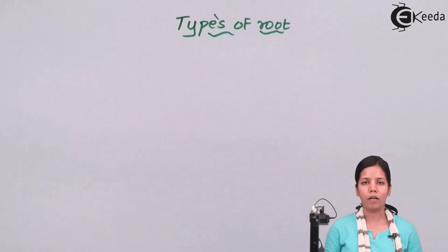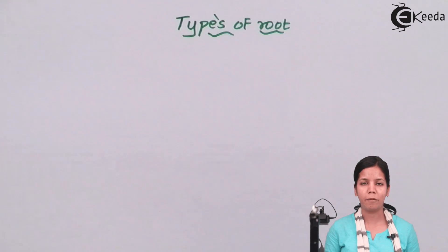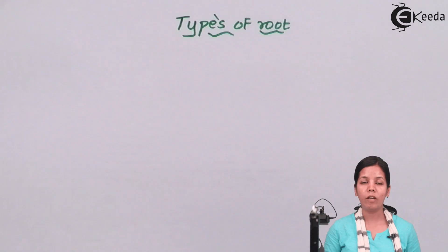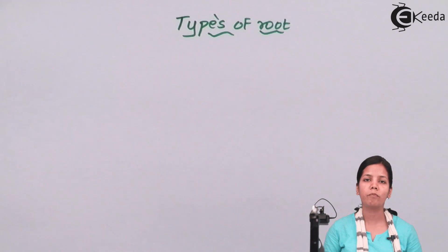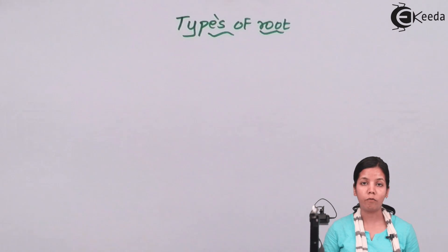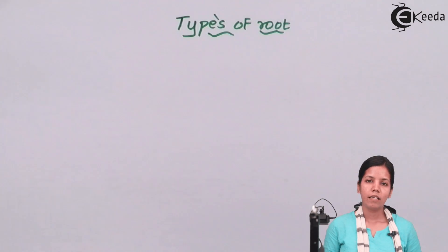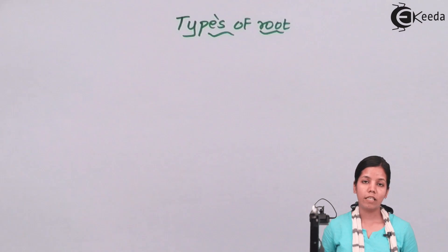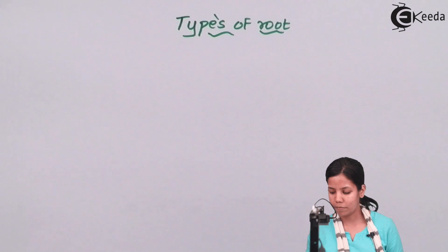Imagine you take a part of the stem of sugarcane — the segmented part — and you plant it inside soil. We all know that sugarcane propagates by vegetative propagation, which is nothing but taking a part and planting it in soil. The roots that will come out from that stem base are nothing but adventitious roots. So these are the two types of roots.